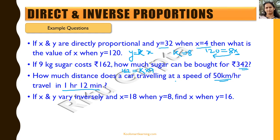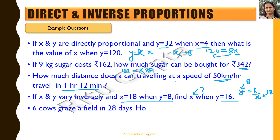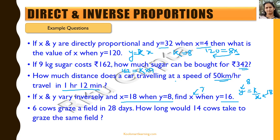If x and y vary inversely and values are given, we say y equals k by x. If y equals 8 and x equals 18, we can find the value of k, and using that, if y equals 16 we can find x. Another example: 6 cows graze a field in 28 days — how long will 14 cows take to graze the same field? Since increasing the number of cows reduces the number of days, days are inversely proportional to the number of cows, and we use that to find the answer.